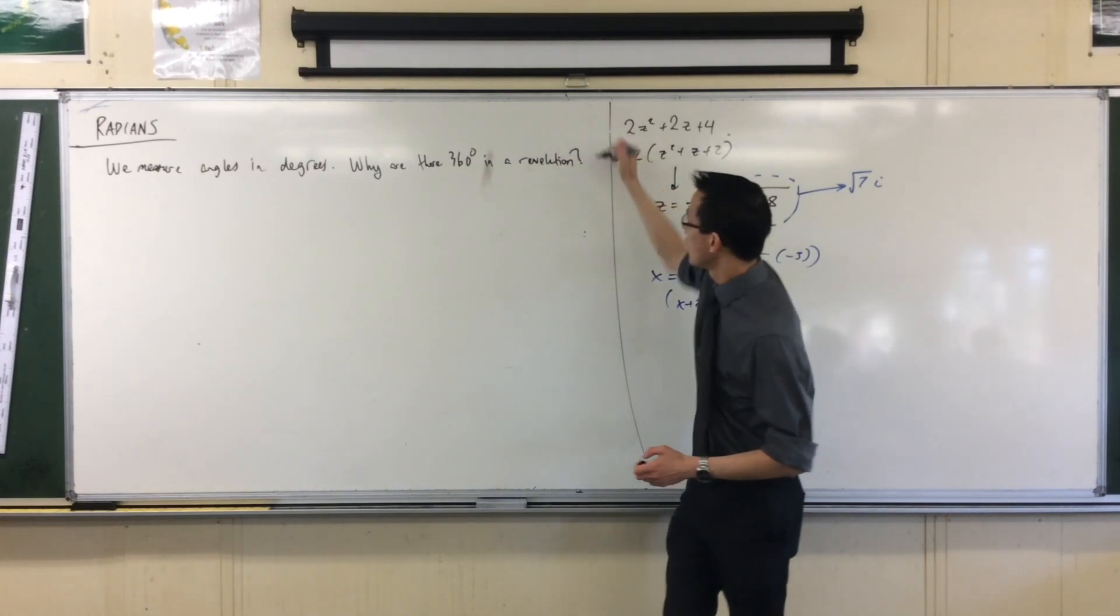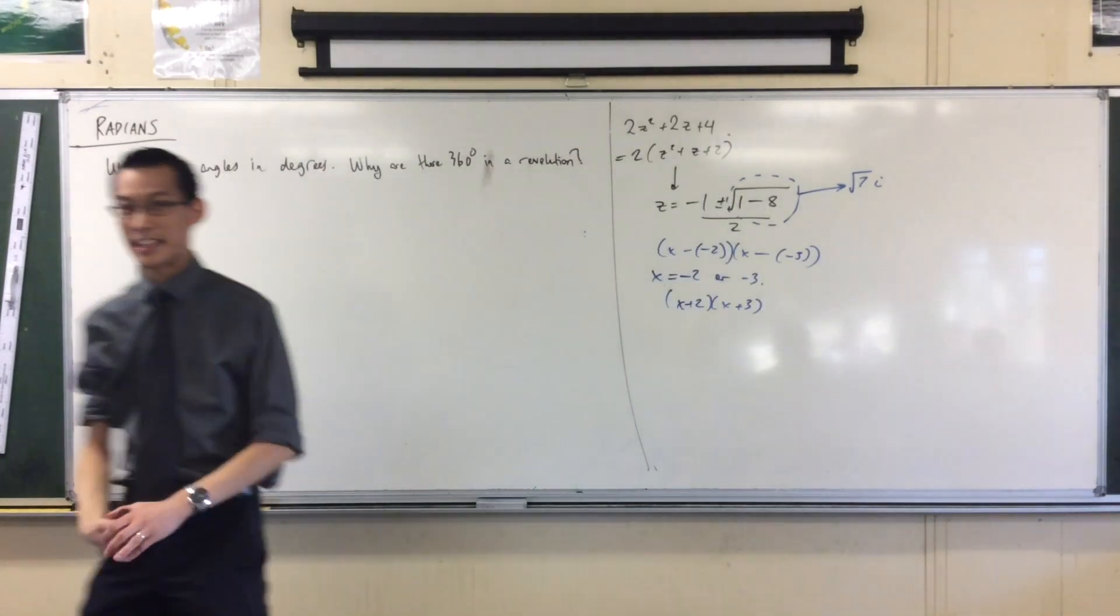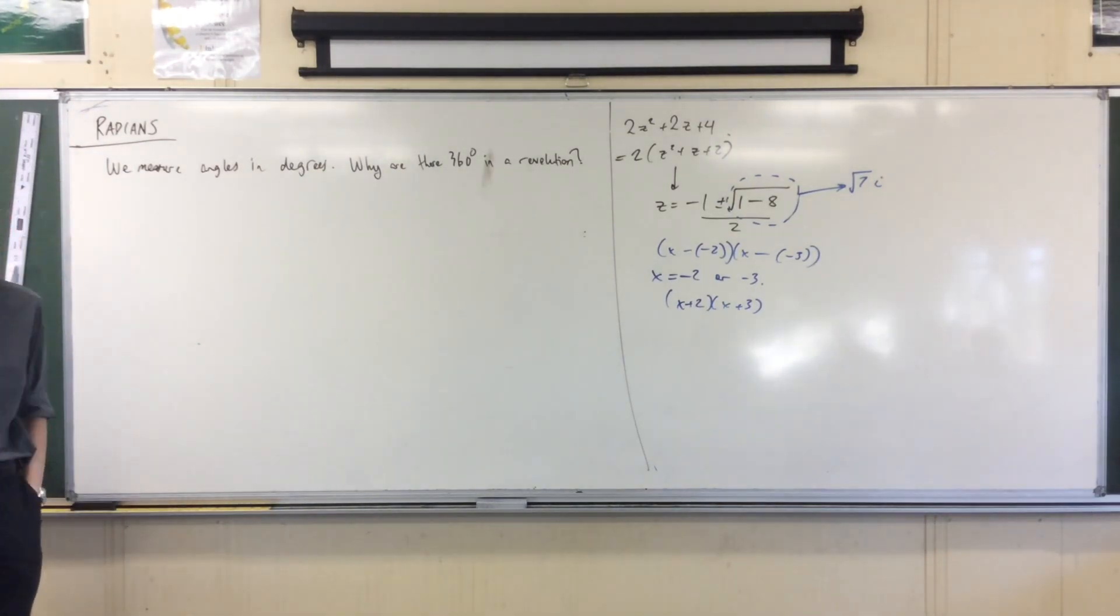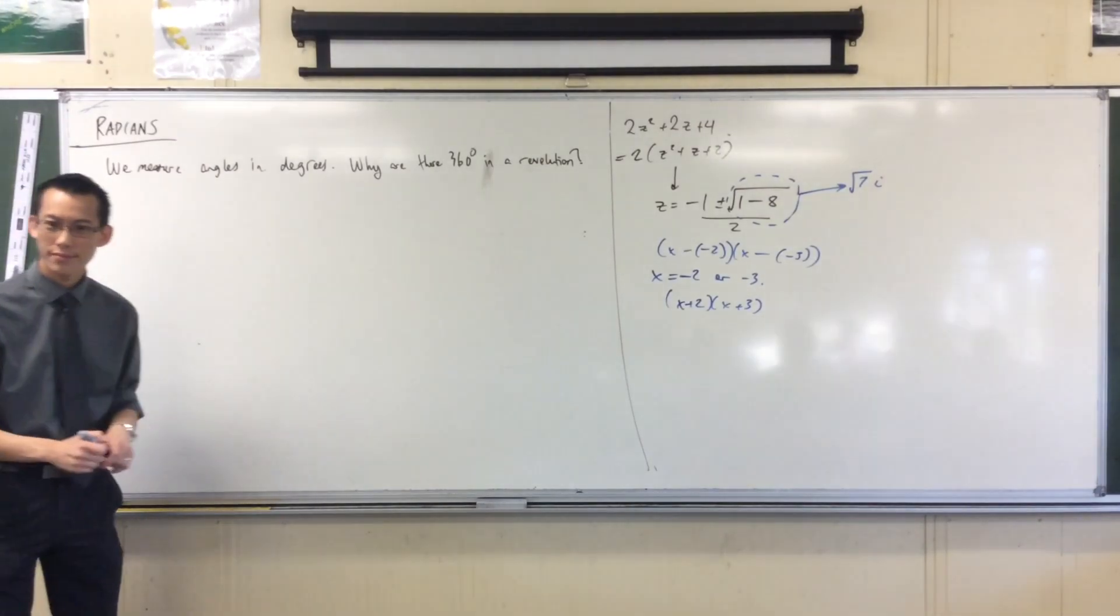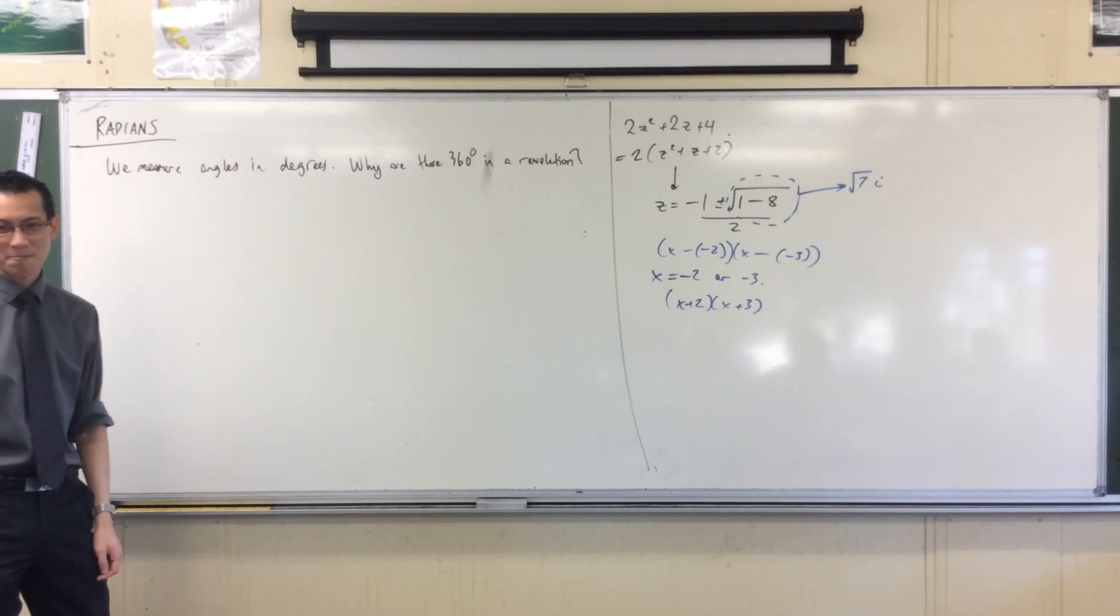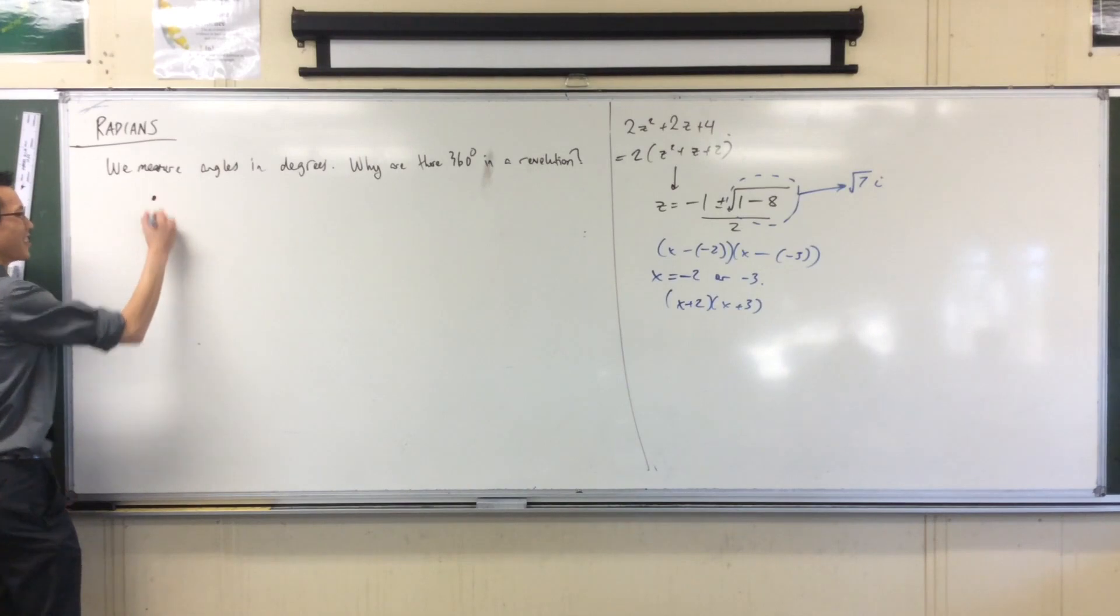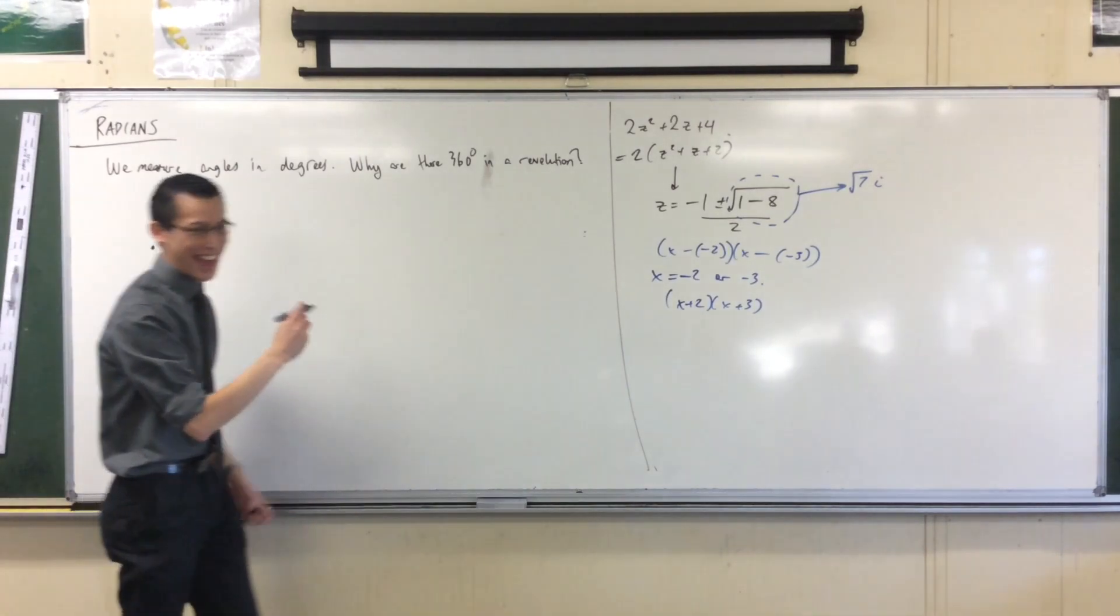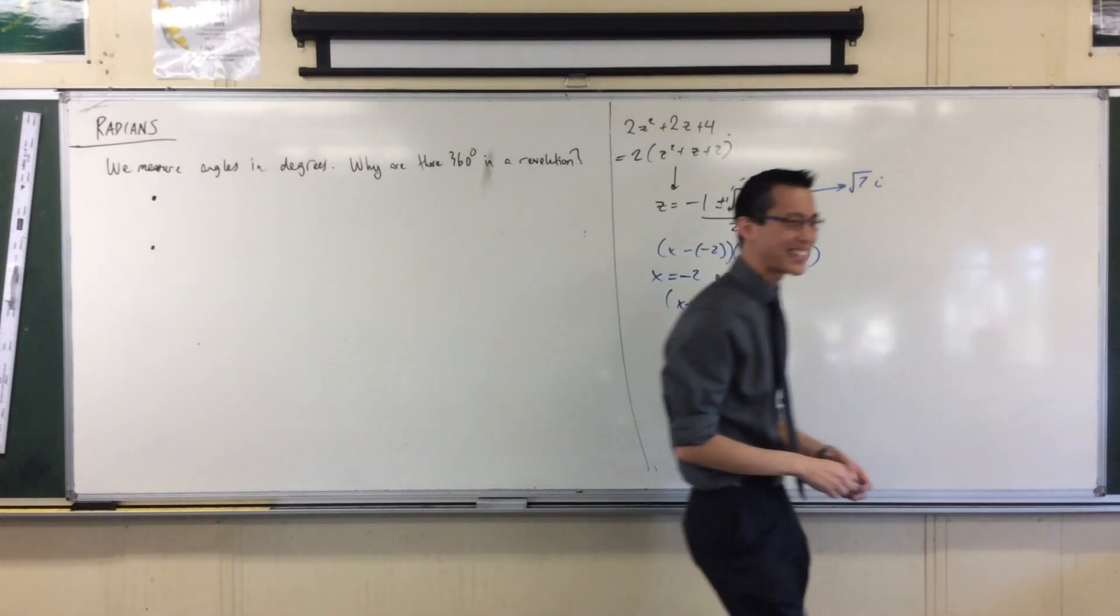It's a fantastic question. It's one of the first questions that gets posed as soon as students learn what degrees are. Why 360 degrees? Because they need 360 degrees to chop someone's head off. What? That was not the answer I was expecting. Violent reasons aside.